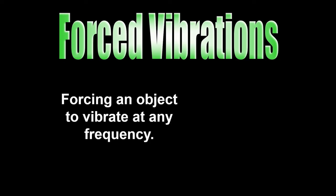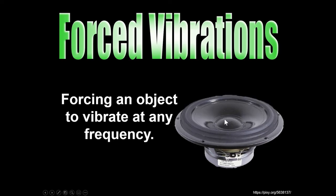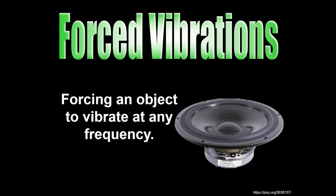Now that we've done natural frequency, let's do forced vibrations. That's just that you can force something to move back and forth at any rate you want — you just have to physically move it. Or in this case, you use a magnet and a coil that uses voltage at different frequencies to make the cone of the speaker move back and forth. The magnetic fields down here are forcing that cone to vibrate, and you could send in a different frequency signal and have it oscillate at a higher frequency. That's just forced vibrations.